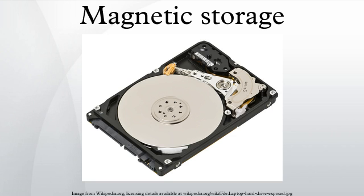Design. Information is written to and read from the storage medium as it moves past devices called read and write heads that operate very close over the magnetic surface. The read and write head is used to detect and modify the magnetization of the material immediately under it. There are two magnetic polarities, each of which is used to represent either zero or one.